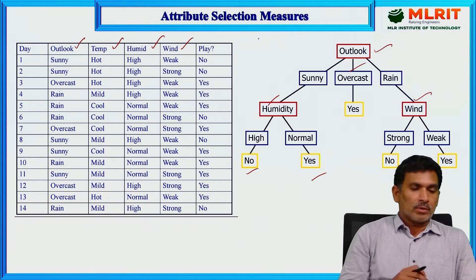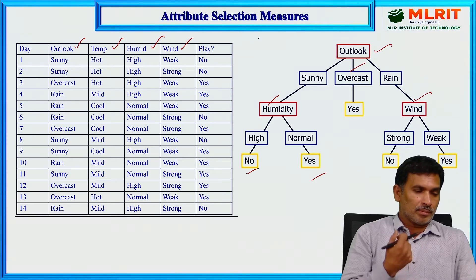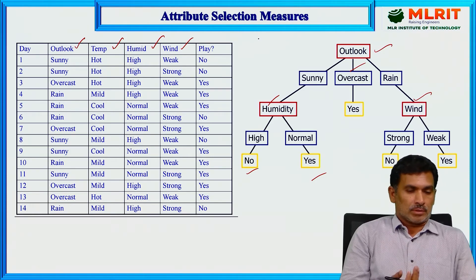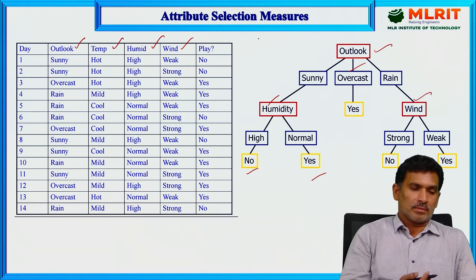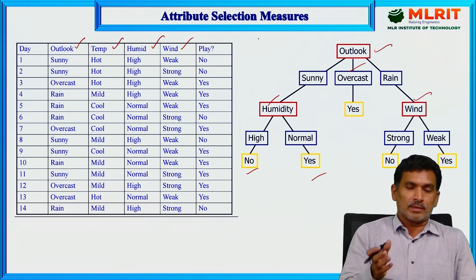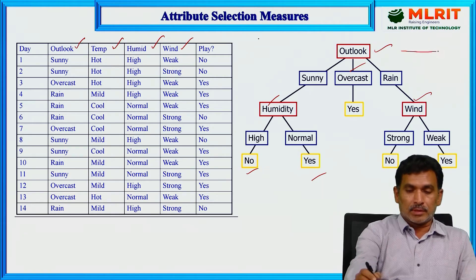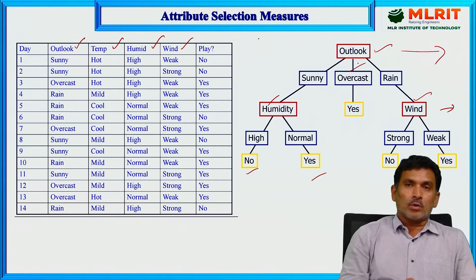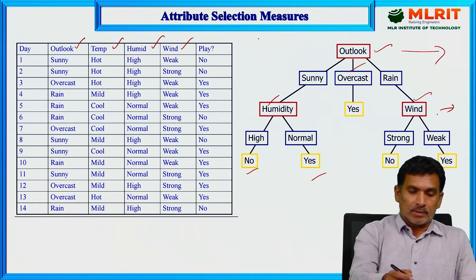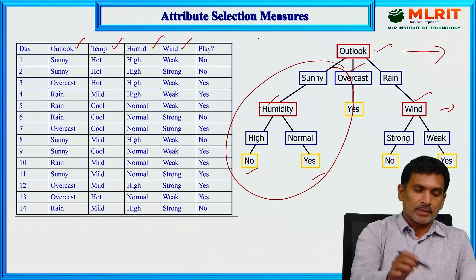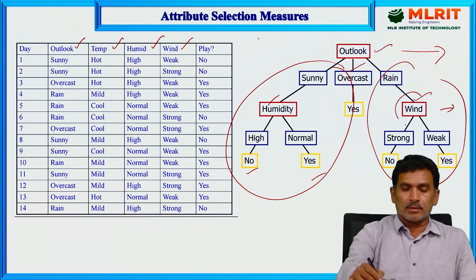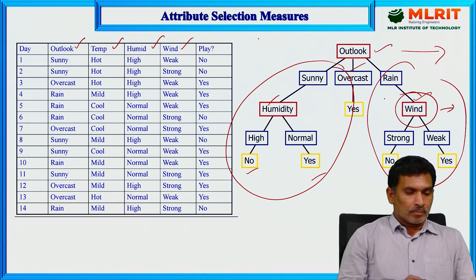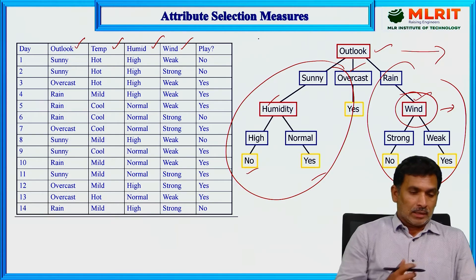How are we going to select this attribute? What measures do we use, and based on which measure will we decide which attribute needs to be selected first or at every level? For example, at level 1 we selected outlook, and at level 2 along one path we selected humidity and along another path we selected wind. There are three measures available: information gain, information gain ratio, and the Gini index.